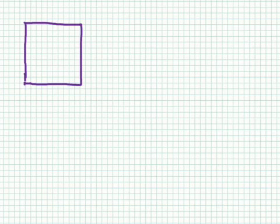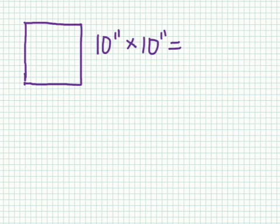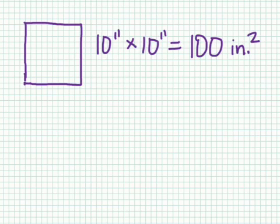We could prove it by counting up all the tiny little squares, and sure enough, we would get 100. But our shortcut would be 10 inches times 10 inches equals 100 inches squared, or squared inches.